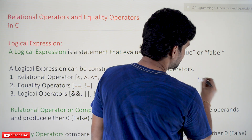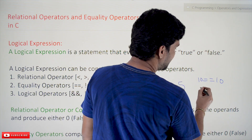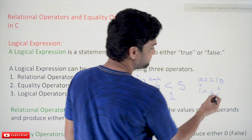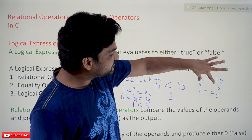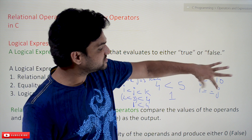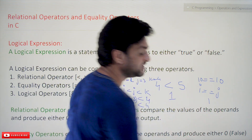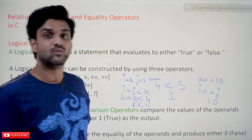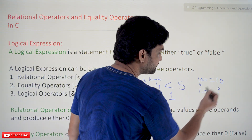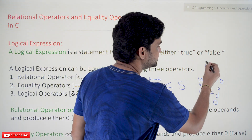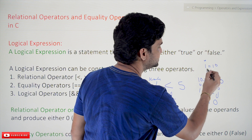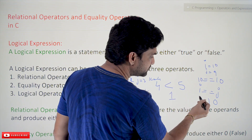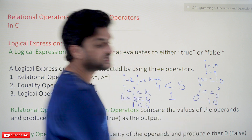For example, if you want to compare i and j using the equality operator (==), the values of i and j are compared. If they are equal, it produces an output of 1; if not equal, it produces 0. So if i is 10 and j is 9, the output will be 0 because they are not equal.